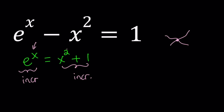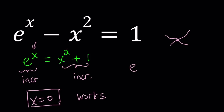Let's go ahead and guess and check our solution. My guess is x equals 0. We can sometimes do that. Well, x equals 0 works, because e to the power 0 is 1, and 0 plus 1 equals 1. Now, are there any other solutions? That's going to be the biggest question here.